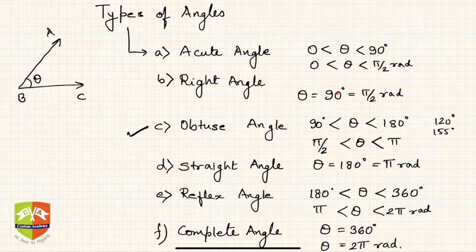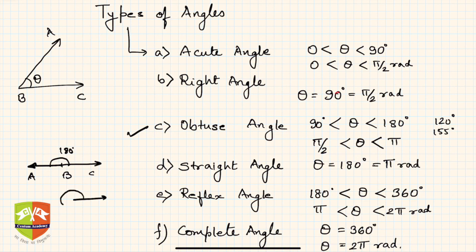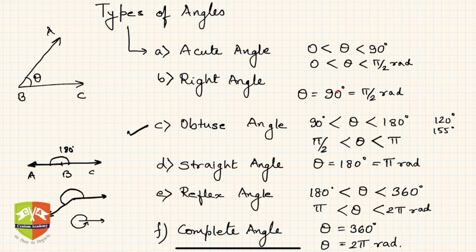A straight angle is formed when two arms make 180 degrees. If you see points A, B, and C in a straight line, the angle is 180 degrees — that is called a straight angle. Then there is the reflex angle: any angle more than 180 but less than 360 degrees. Finally, a complete angle is when the two arms coincide with each other, making 360 degrees.